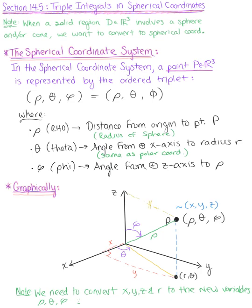This length is equivalent to the radius from the xy-plane, and this height z here is equivalent to the height z on the other side, giving another right angle. We now need to convert x, y, z, and r to spherical coordinates — in terms of rho, theta, and phi — using this new right triangle.